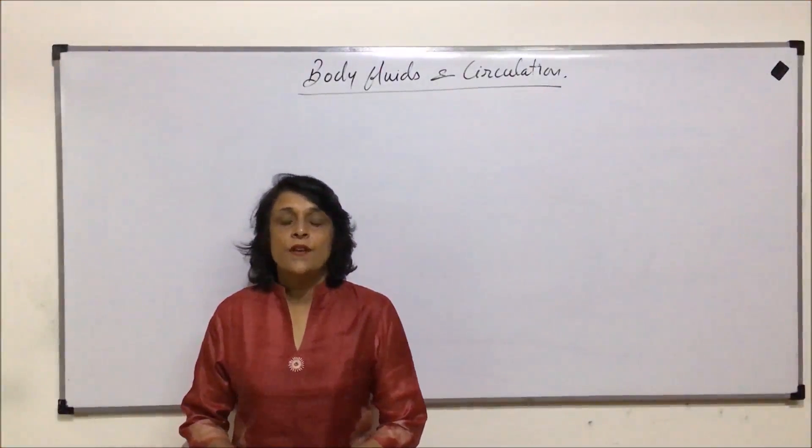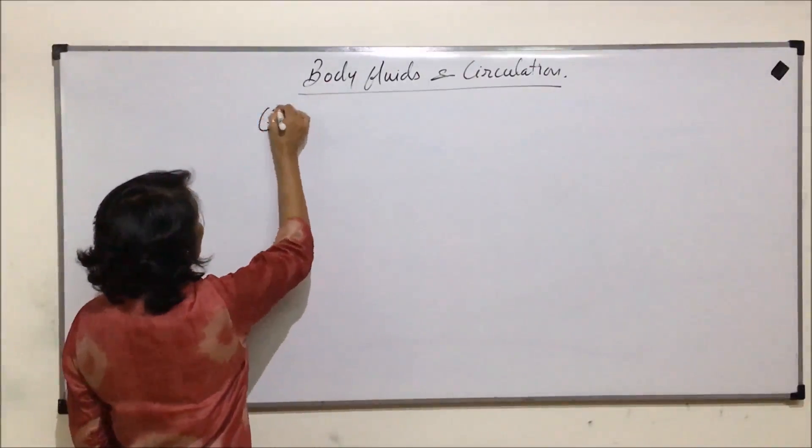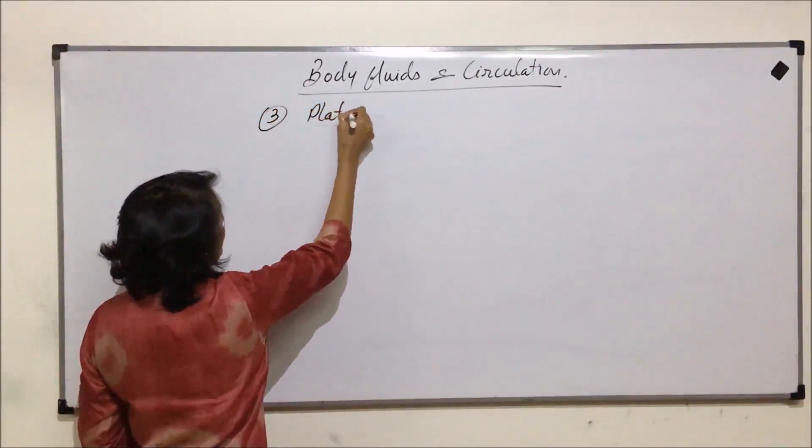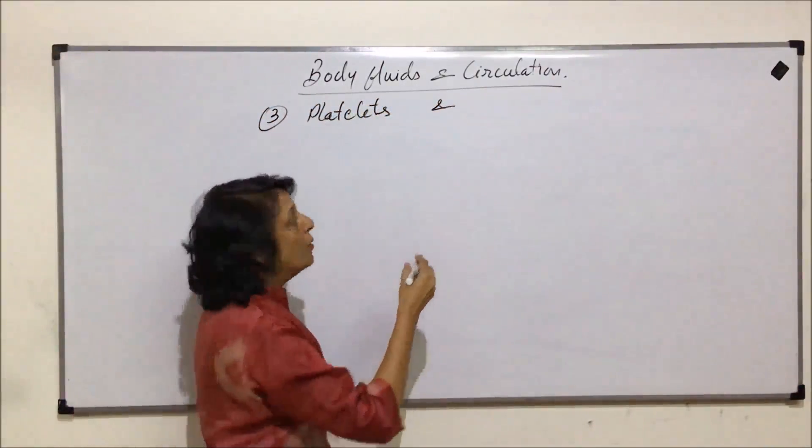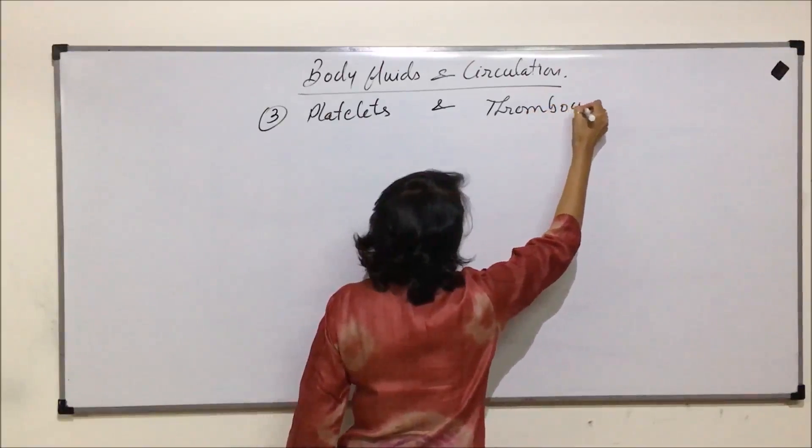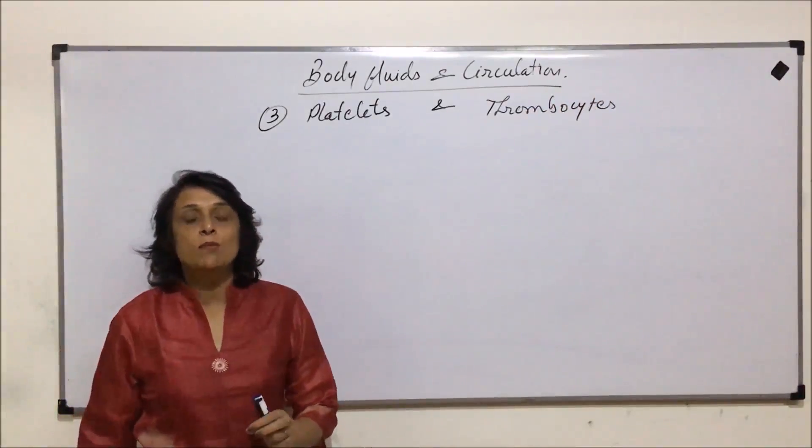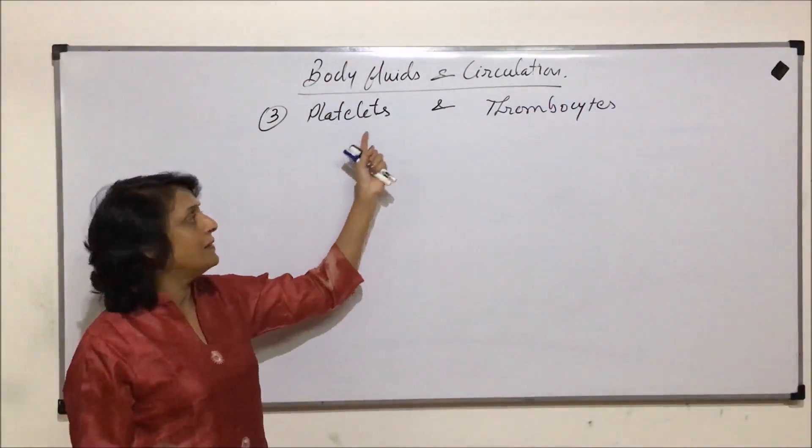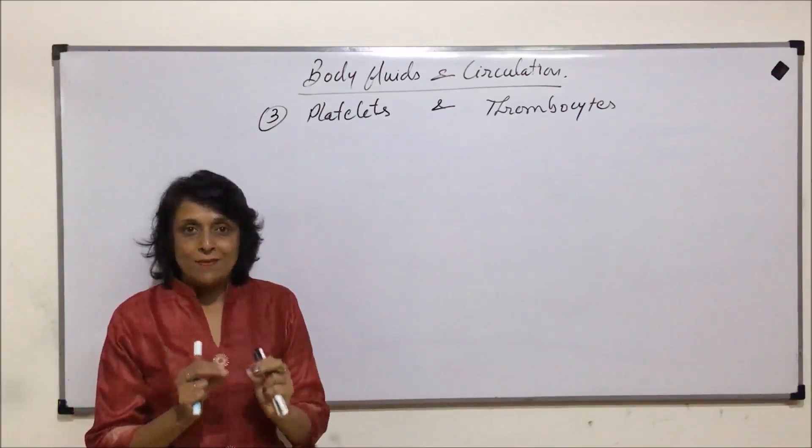We are now going to discuss the third type of corpuscle, that is platelets, and we will also talk of thrombocytes. Now in many cases or many books we find platelets or thrombocytes written. Are these two the same things?